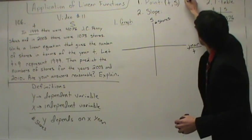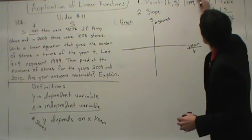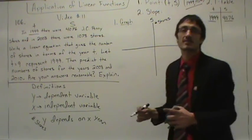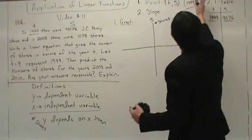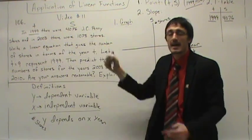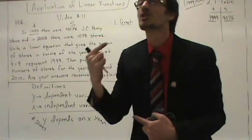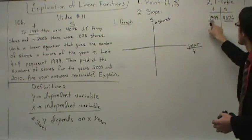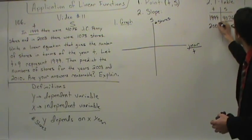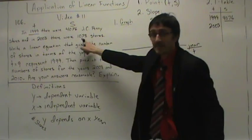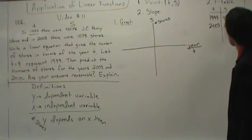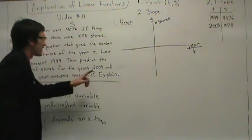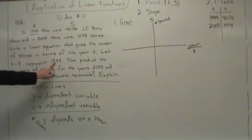We have 1999 and 4,076 stores. Do you see that the problem is giving you a point? This problem is giving you points, and with points we can find a slope. In 1999 there were 4,076 stores, and in 2003 there were 1,078 stores. Now, there's something else in the problem: it says let T equal 9 represent 1999.